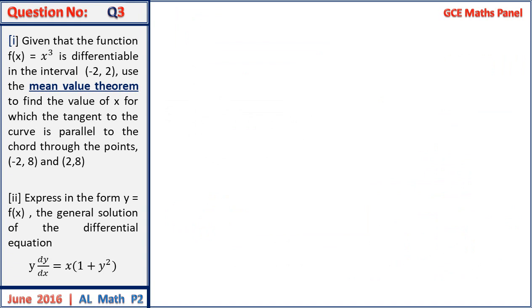Given that the function f of x equals x to the power 3 is differentiable in the interval minus 2 to 2, use the mean value theorem to find the value of x for which the tangent to the curve is parallel to the chord through the points minus 2, 8 and 2, 8.